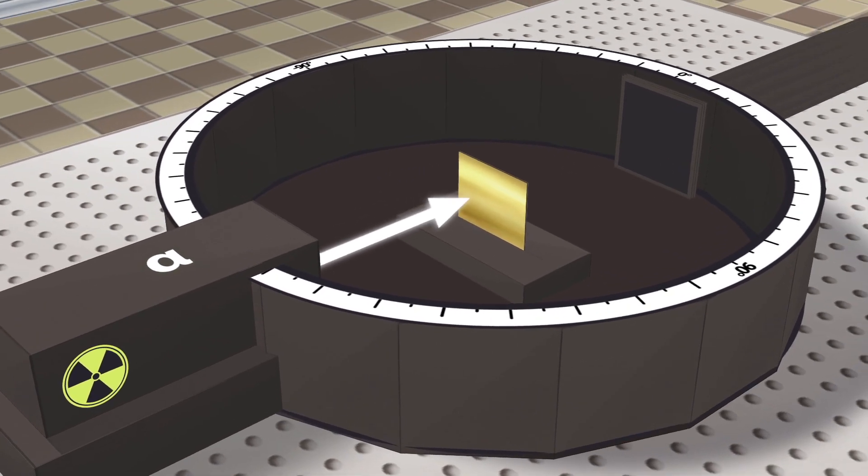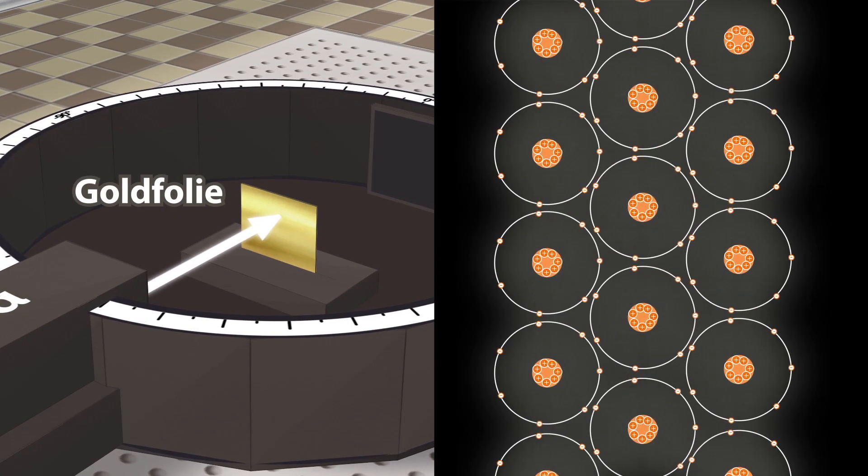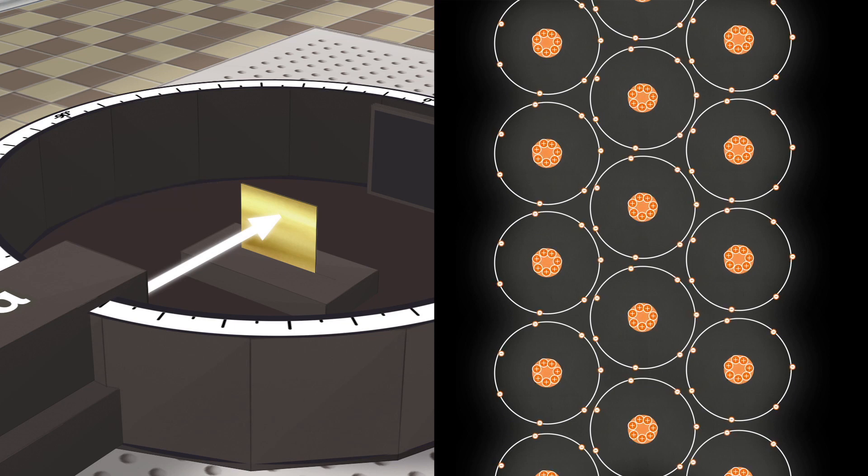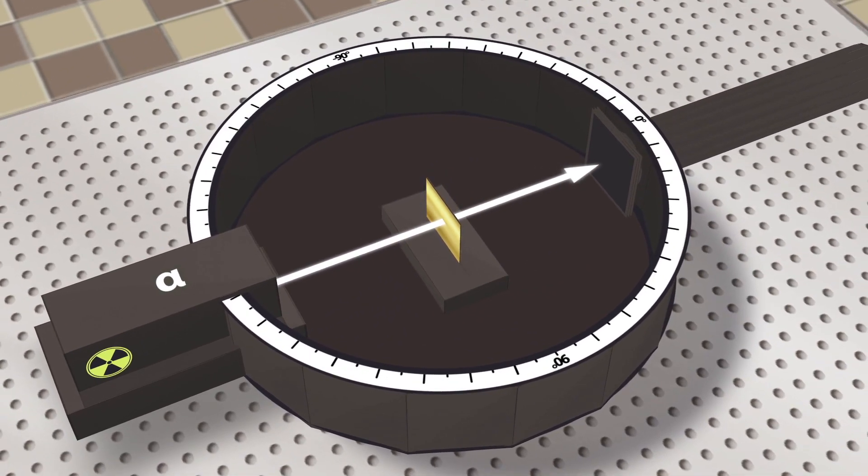Rutherford chose a gold foil as a target for fast alpha particles. The foil was extremely thin and had only a few atomic layers. To measure how alpha particles were deflected in the gold foil, Rutherford used scintillation screens.